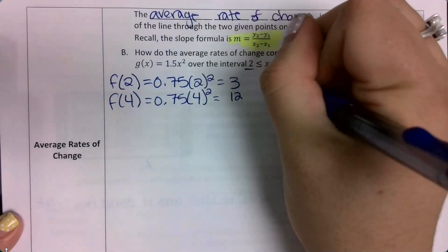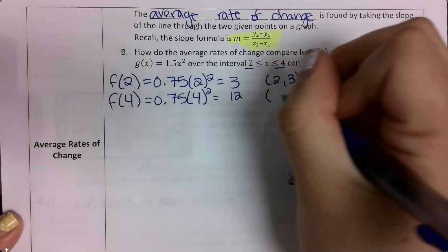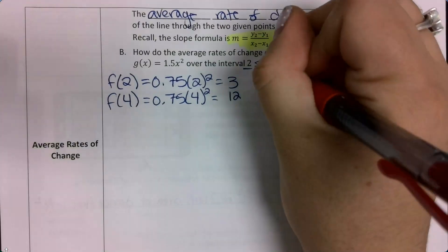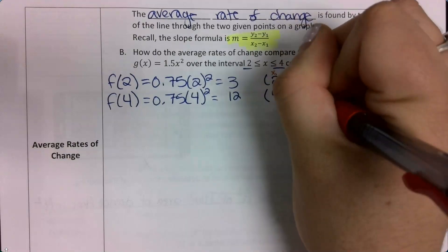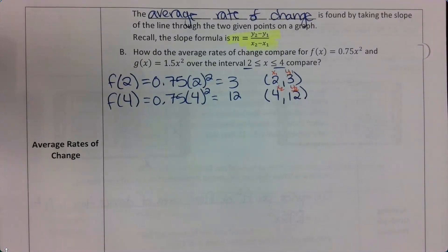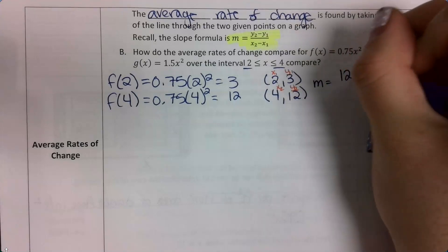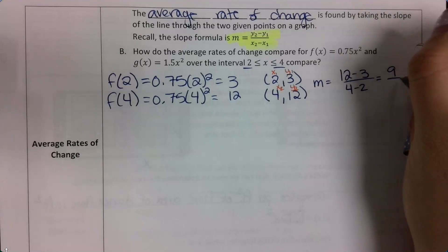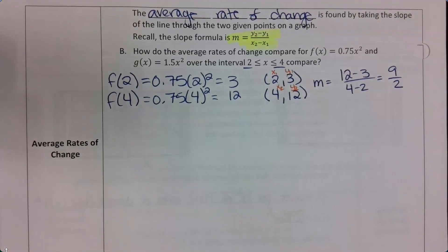So my first coordinate point was 2, 3. I plugged in 2, I got out 3. My second coordinate point is 4 comma 12. I plugged in 4, I got out 12. So this is going to be my x sub 1, my y sub 1, and this one is going to be my x sub 2, my y sub 2. So I want to plug into my slope formula. So I'm going to have 12 minus 3 over 4 minus 2, and that's not going to simplify anymore without turning into a decimal, so I'm going to leave it like that.